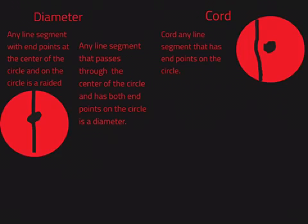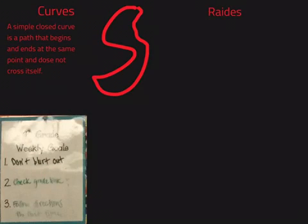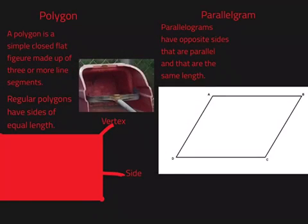A closed curve is a path that begins and ends at the same point and does not cross itself. A polygon is a simple closed flat figure made up of three or more line segments.